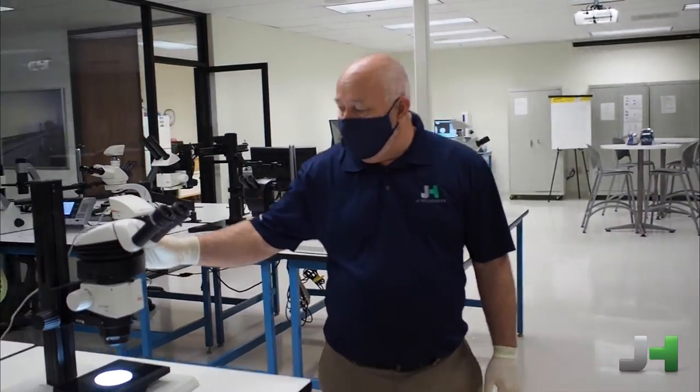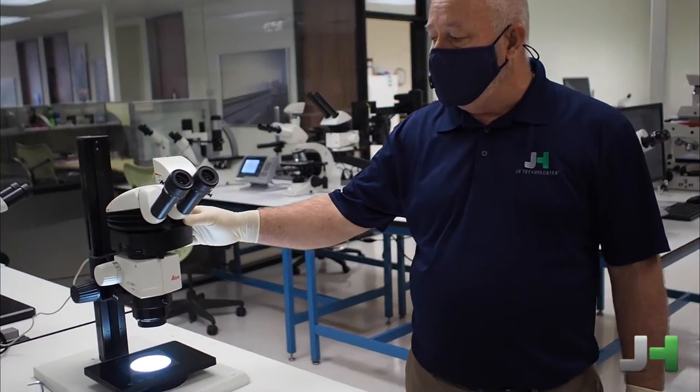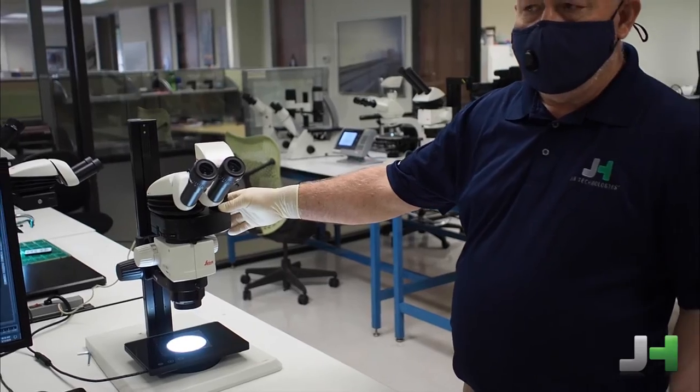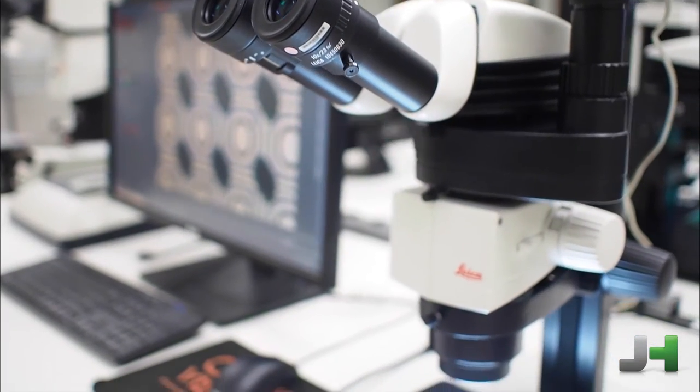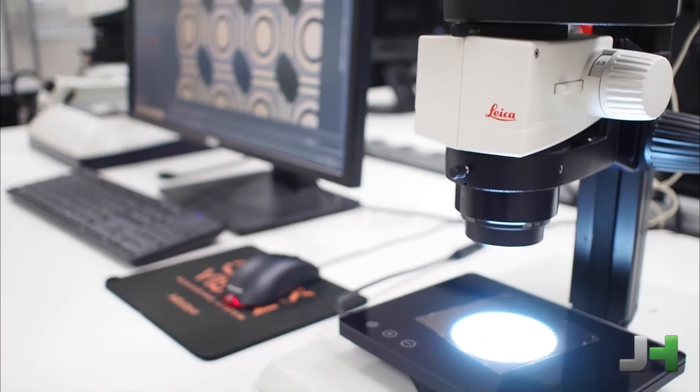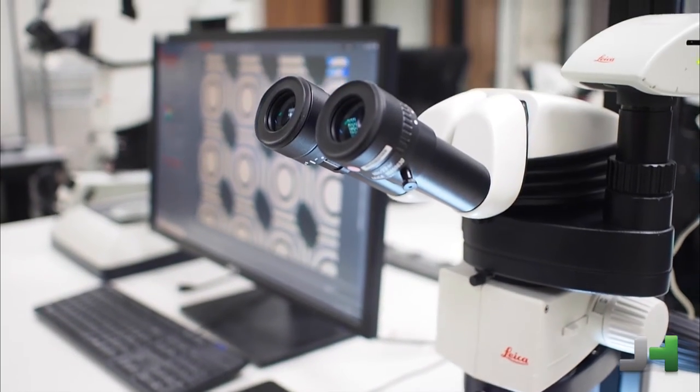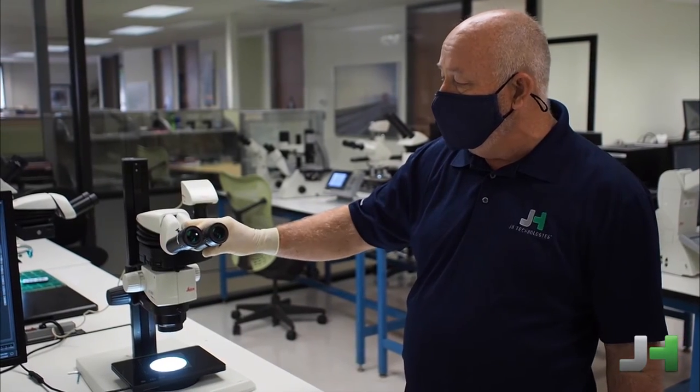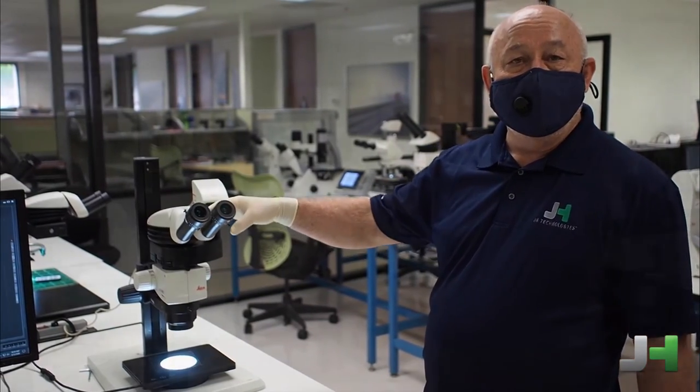This is a Leica M80. The M80 is primarily used as a routine microscope. And by routine, basically it means it's being used typically in a manufacturing environment for inspection or work underneath. And it is an ergonomic microscope. So we do have ergonomic microscopes as well as standardized microscopes.